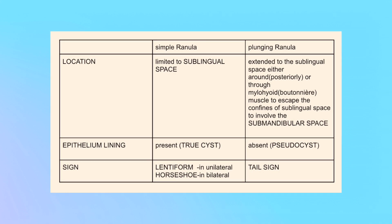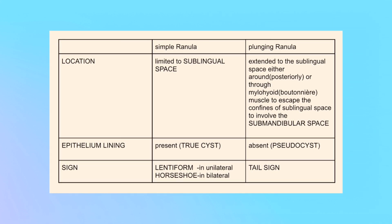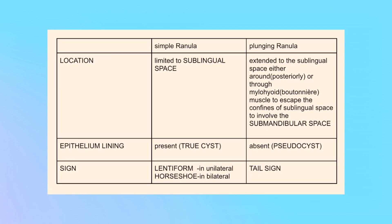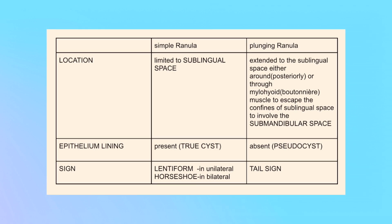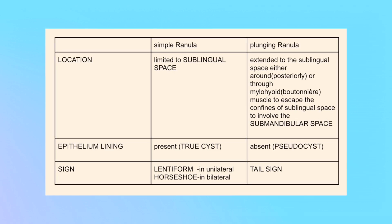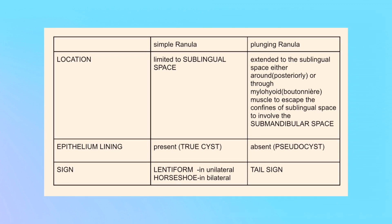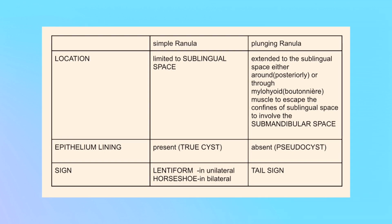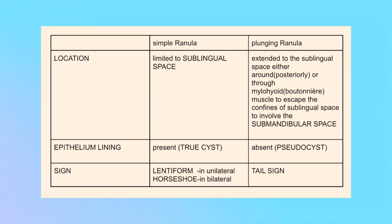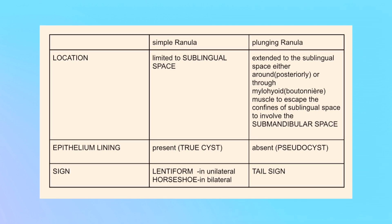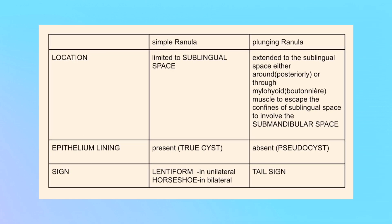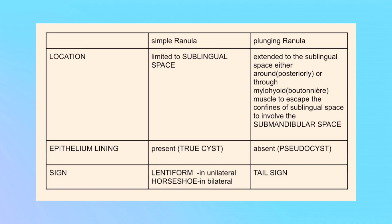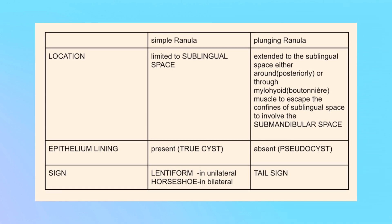Plunging ranulas can extravasate by two pathways: either through a mylohyoid muscle defect, also known as mylohyoid boutonniere, or along the posterior edge of the mylohyoid muscle. Since they extend by extravasation, plunging ranulas are pseudo cysts, while simple ranulas are true cysts. Simple ranulas are lined by epithelial cells, while plunging ranulas are not lined by epithelial cells — they are extravasations, and that is why they are pseudo cysts.